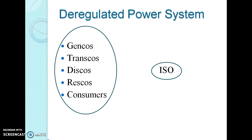The different entities of the deregulated power system are: Genco, Transco, Disco, Resco, Consumers, and ISO. The Genco is nothing but a generation company. It is an owner-operator of one or more generators that runs them and bids the power into the competitive marketplace. Genco sells energy at its site in the same manner that a coal mining company might sell coal in bulk at its mine.